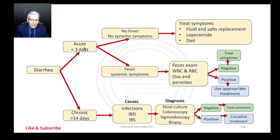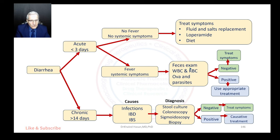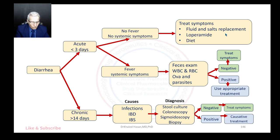If the patient has acute diarrhea associated with fever or systemic symptoms, we order feces culture and stool exam to check for white blood cells, red blood cells, ova, or parasites. If the stool exam and culture come back negative, we treat symptoms.